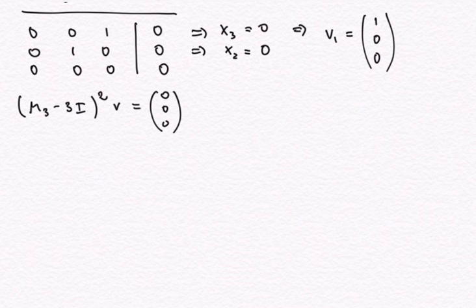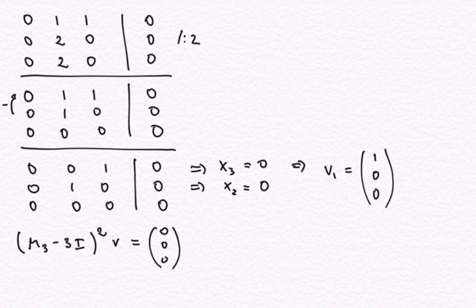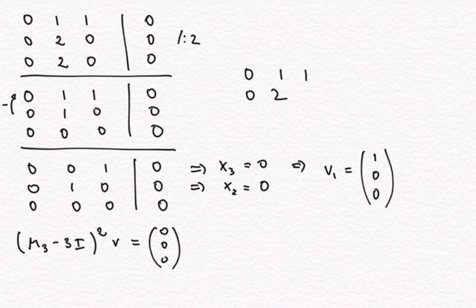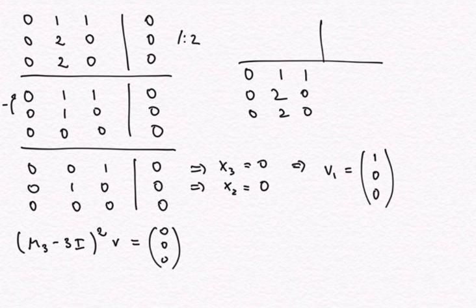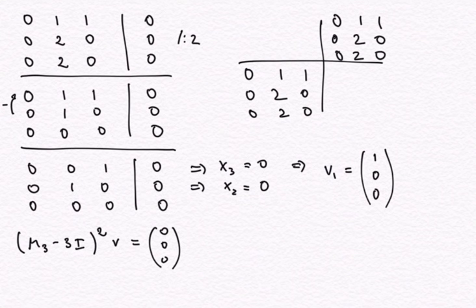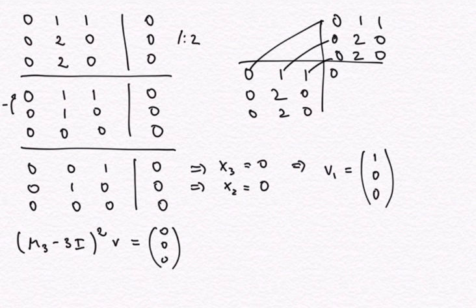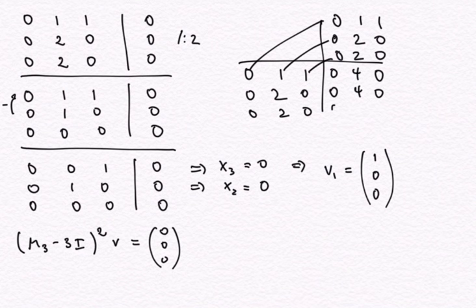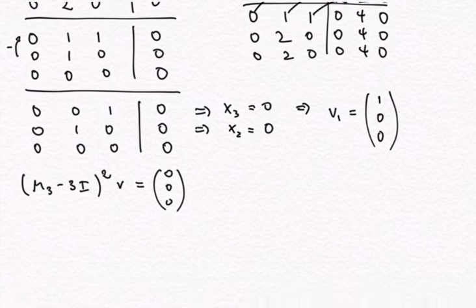Let's compute the squared matrix. We have M3 minus 3I as 0, 1, 1; 0, 2, 0; 0, 2, 0. Multiplying this by itself: the first row gives all zeros for the first entry, then 0 times 1 plus 1 times 2 plus 1 times 2 equals 4, giving 0, 4, 0. Similarly I get rows 0, 4, 0 and 0, 4, 0. We have a very simple matrix where all rows contain the same information.